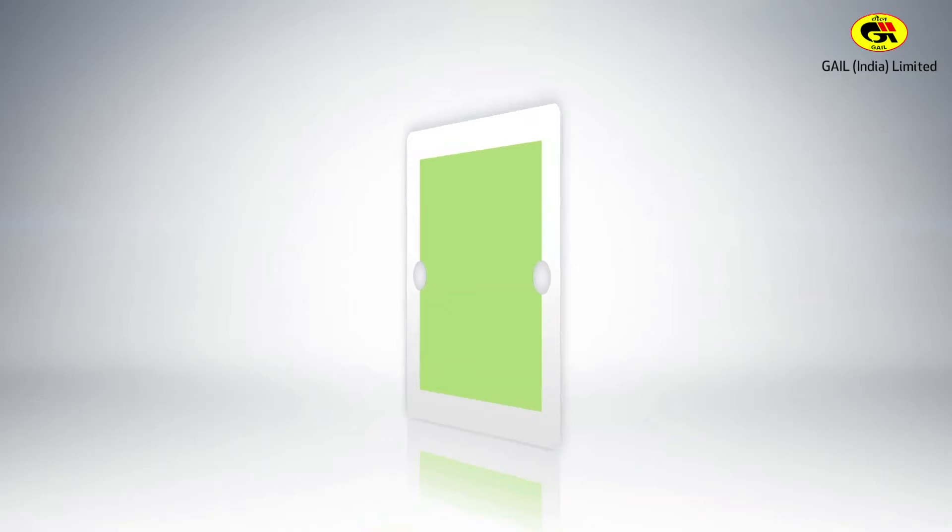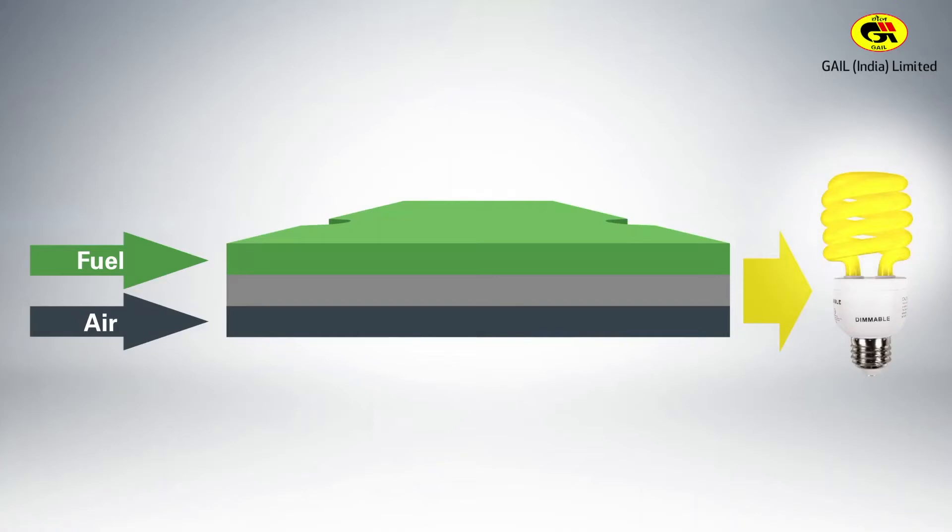One fuel cell like this can produce enough power for one light bulb by taking fuel on one side, air on the other side, and producing electricity with no flame, with no combustion. So very little pollution, very high efficiency.